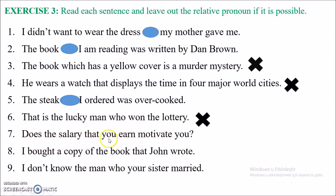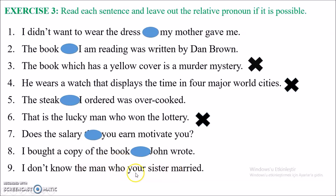Number seven: 'Does the salary that you earn motivate you?' After 'that', we have a subject 'you', so this is an object relative clause — I can omit the pronoun. Number eight: 'I bought a copy of the book that John wrote.' 'That' is my relative pronoun. 'John' is the subject and then the verb — pronoun is the object, so I can omit 'that'. Last one: 'I don't know the man who your sister married.' 'Who' is my pronoun. 'Your sister' is the subject, then the verb 'married' — pronoun is in object position, so we can omit 'who'.